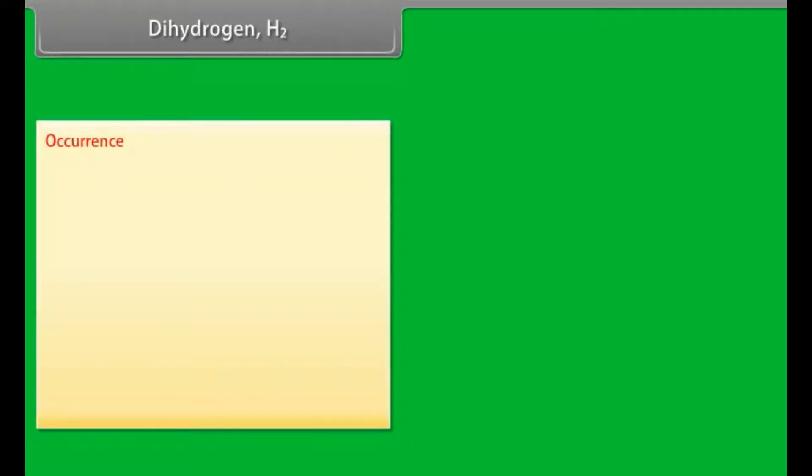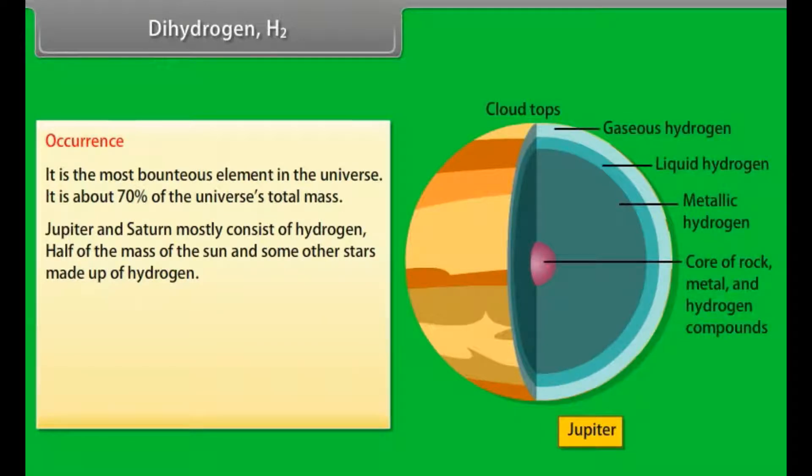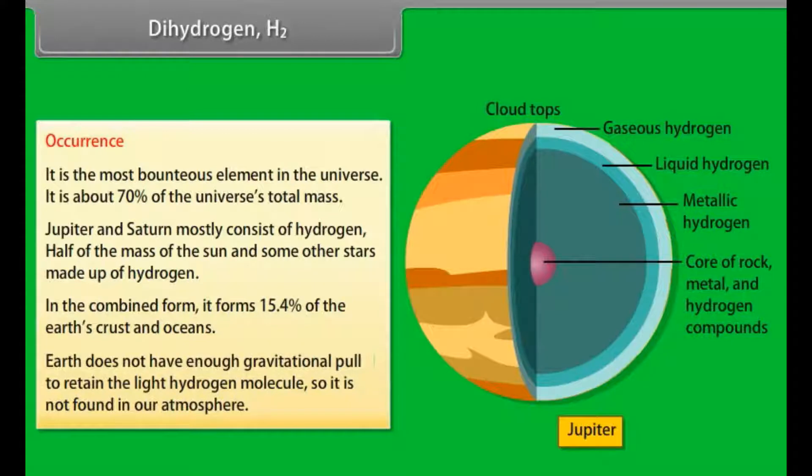Dihydrogen H2 Occurrence. Dihydrogen is the most abundant element in the universe. It has about 70% of the universe's total mass. Jupiter and Saturn mostly consist of hydrogen. Half of the mass of the sun and some other stars made up of hydrogen. In the combined form, it forms 15.4% of the Earth's crust and oceans. Earth does not have enough gravitational pull to retain the light hydrogen molecule, so it is not found in our atmosphere.